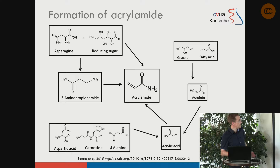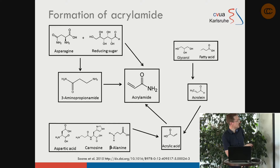The major pathway is shown on the upper left panel: asparagine, an amino acid, reacts with reducing sugars, likely via an intermediate compound, to form acrylamide. There are also other pathways from fats and fatty acids, but for coffee, the asparagine and reducing sugar pathway appears to be the major one.